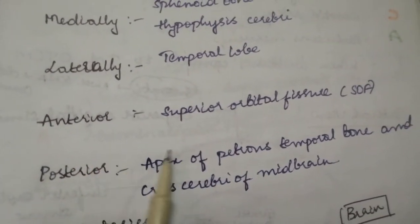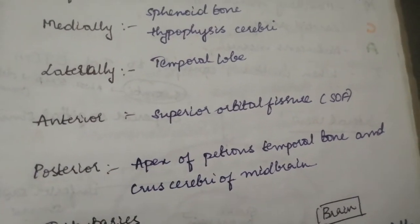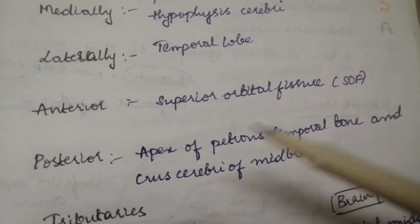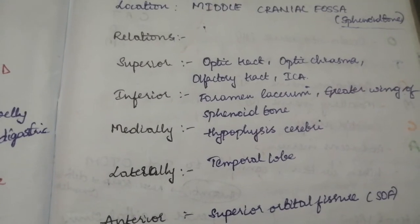When coming to anteriorly it has superior orbital fissure and posteriorly it has petrous apex of petrous temporal bone and your crus cerebri of midbrain. These are your relations of your cavernous sinus.